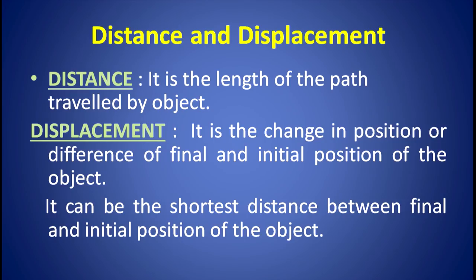Now, we can differentiate between what is distance and what is displacement. The answer to question number 1 and 3 is distance, and the answer to question number 2 and 4 is displacement. So, distance is the length of the path travelled by the object, and displacement is the change in position, or the difference of final and initial position of the object. It can be the shortest distance between the final and initial position of the object.